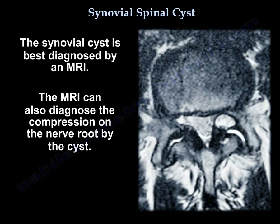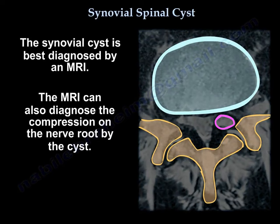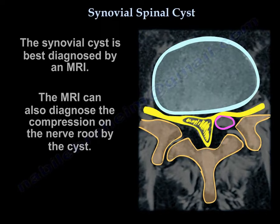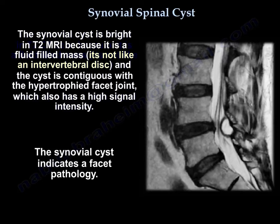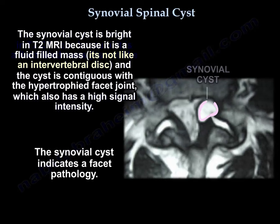It is best diagnosed by an MRI. The MRI can also diagnose the pressure on the nerve root by the cyst. The cyst is bright on T2 because it is a fluid-filled mass — it's not like a disc. The cyst is contiguous with the hypertrophied facet joint, which also has a high signal intensity. The synovial cyst indicates a facet pathology.